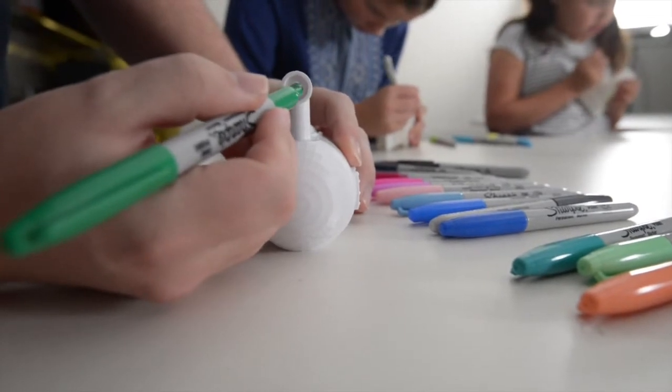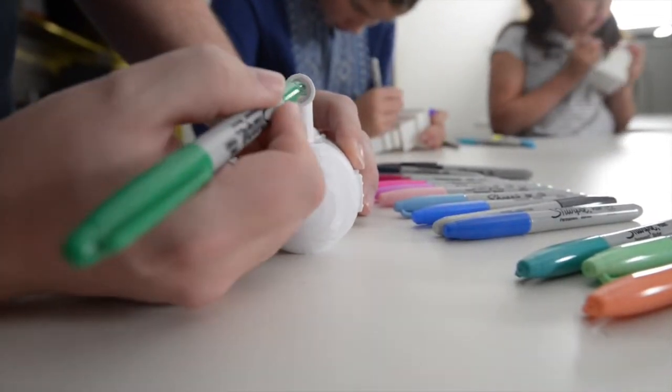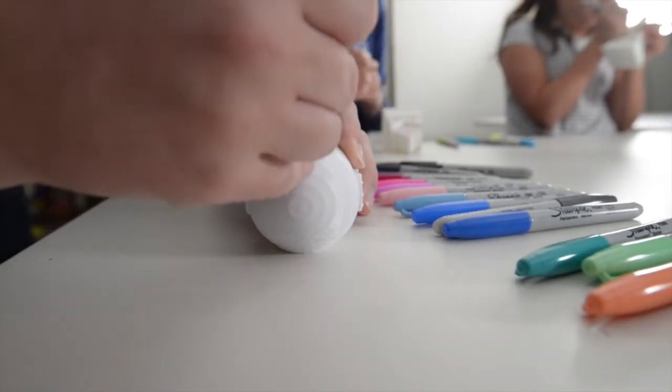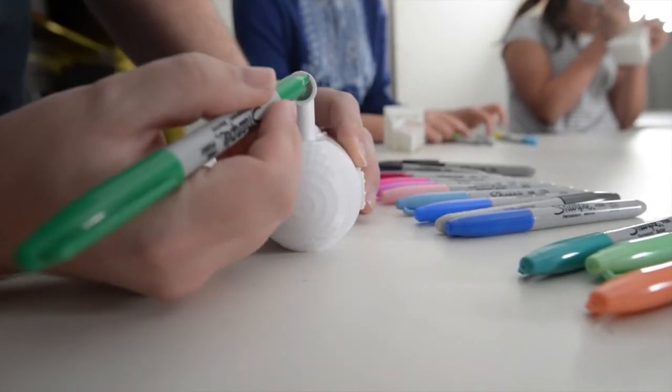So one thing you may notice while coloring in something with the Sharpie is that the ink in the pen will actually leap and will run through the layer lines themselves. So just bear that in mind.